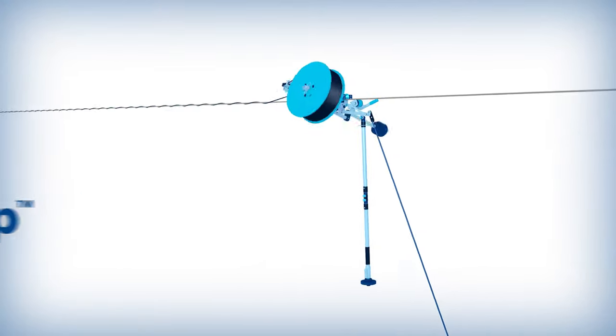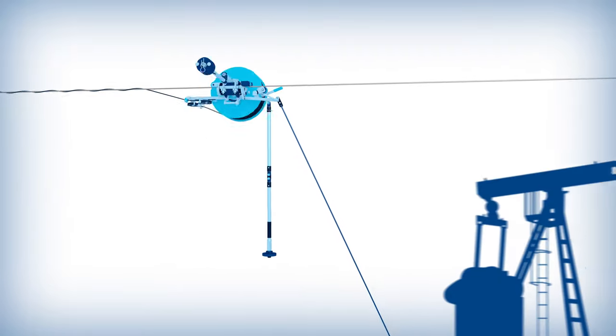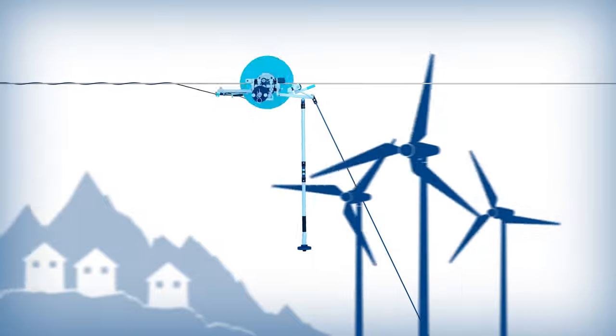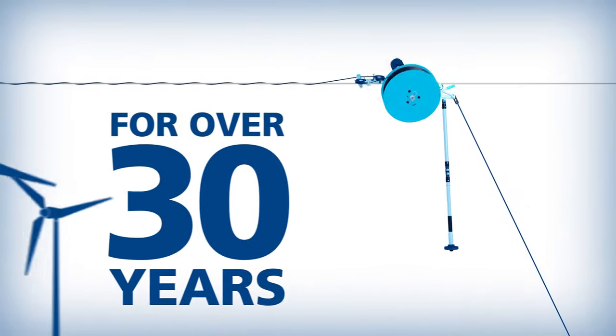AccessWrap by AFL is a proven attached fiber optic solution for medium voltage energy infrastructure, which has been successfully installed across the world for over 30 years.